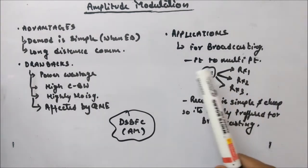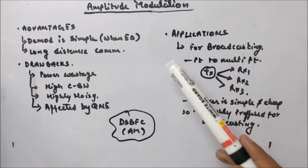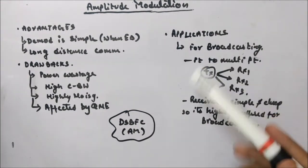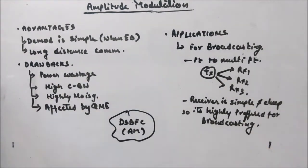Usually receiver is cheap and simple. So that is why for broadcasting purpose this technique is used. So this is the application part, advantage part, and drawbacks part.